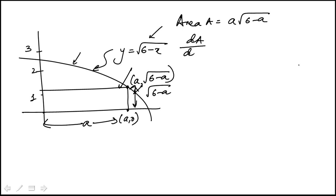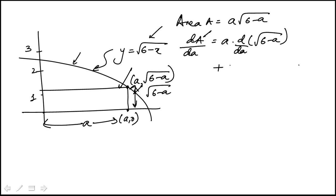To find the relative extremum, I'm going to find the derivative and set it equal to 0. This is a product, so I'm going to use the product rule. I used A as the variable name — I chose A maybe because I have another A here, so I hope that doesn't confuse you. So it would be dA over dA, which is just 1 for the derivative of that first factor.